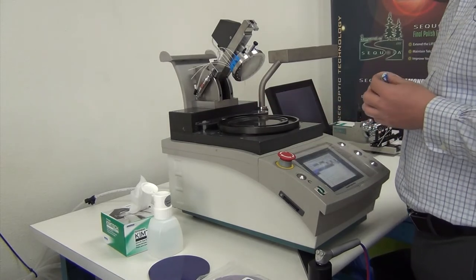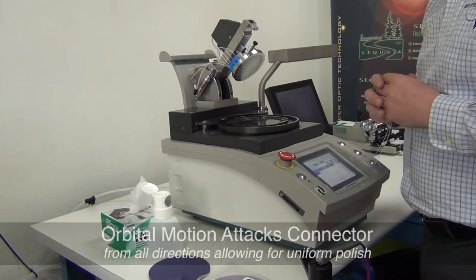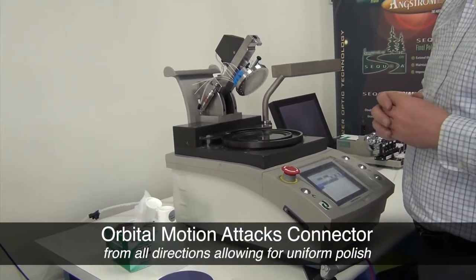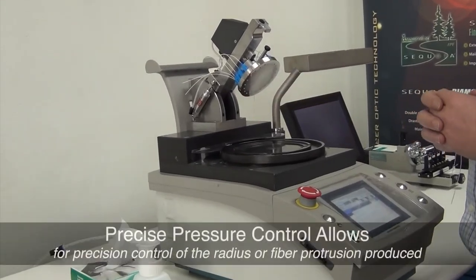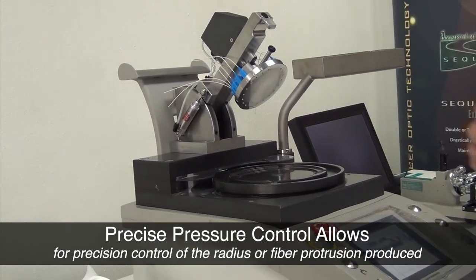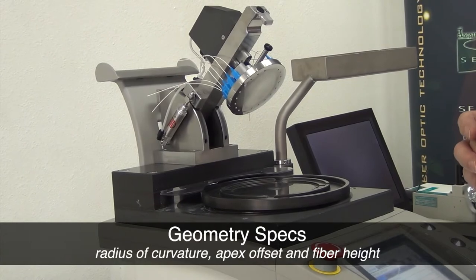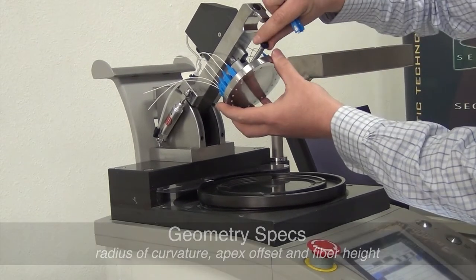A couple of things to consider when choosing a high-volume production polisher is to select a machine with a high level of workmanship. The platen should move in an orbital motion to help create or maintain a spherical end face to that connector. It should have precise pressure control to the polishing plate that will make contact with that platen, in case you want to fine-tune and refine your processes based on a certain set of industry standards or geometries that you may need to meet.